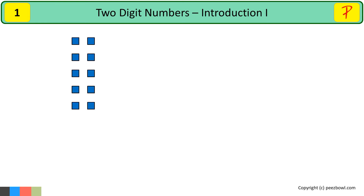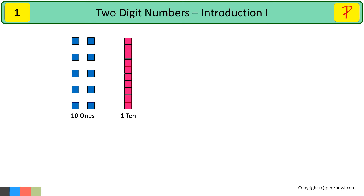Here we have ten squares in blue. These are nothing but ten ones. And you know that ten ones make one ten. So here the pink line is equal to one ten. On the left side, ten ones is equal to one ten on the right-hand side. Remember that all the blue squares are ones and the pink line is equal to one ten.